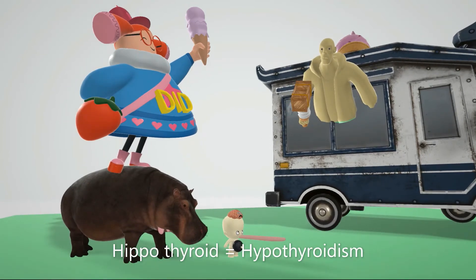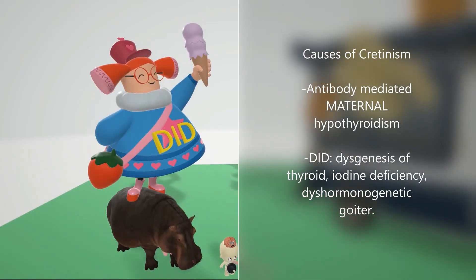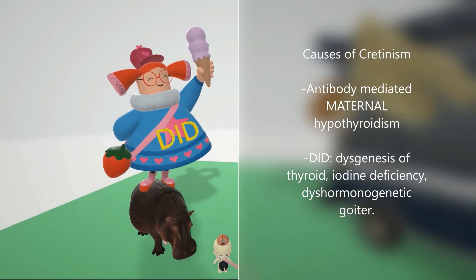What are the causes of Cretanism? Over here we see the mother of the baby standing on the hippo with the thyroid. This reminds us that a cause of Cretanism can be maternal hypothyroidism — severe hypothyroidism due to antibody-mediated maternal hypothyroidism. Other causes include: D for Dysgenesis of the Thyroid, which is the most common cause in the US; I for Iodine Deficiency; and D for Dishormonogenetic Goiter, commonly due to mutation in thyroid peroxidase.